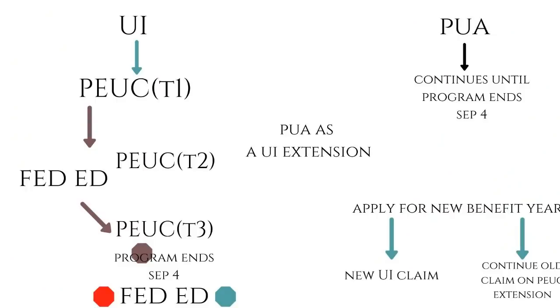Fed Ed is a partially state-funded, partially federally funded extension program, which is triggered on if the state unemployment rate is 6% or higher, or if the state unemployment rate is 5.5% or higher and is higher than it was the last two years. Fed Ed is currently available as an extension for up to 20 weeks. In order to qualify for Fed Ed, you must meet a certain set of requirements — I'm going to link the video where I show how to figure that out down below.